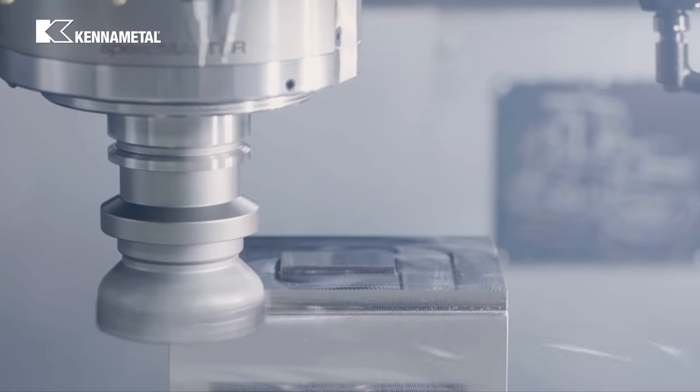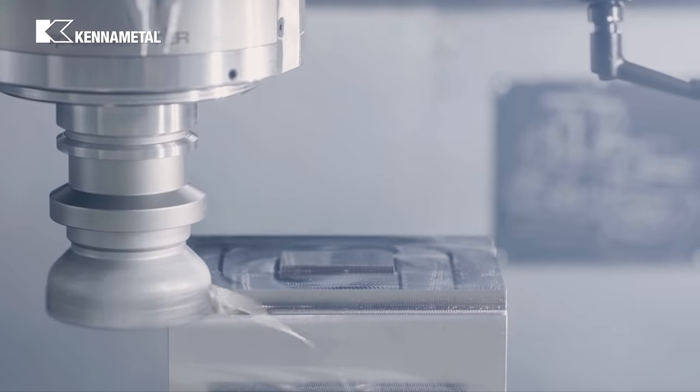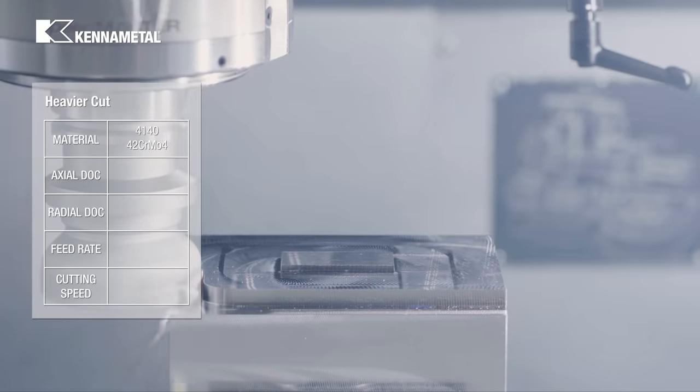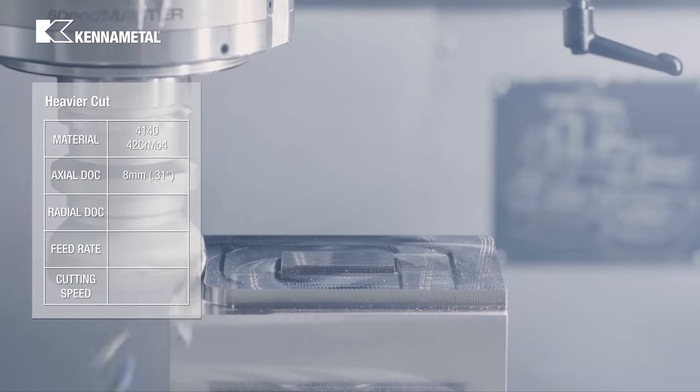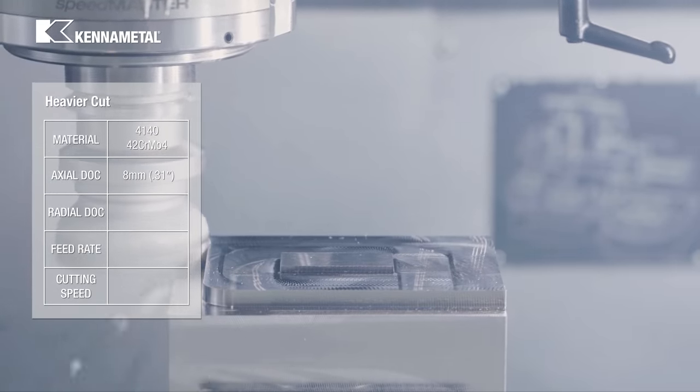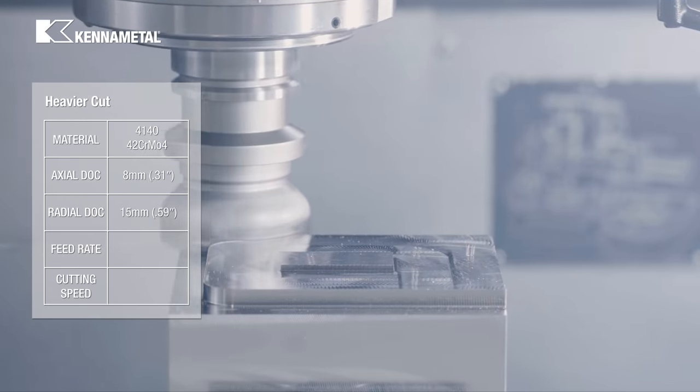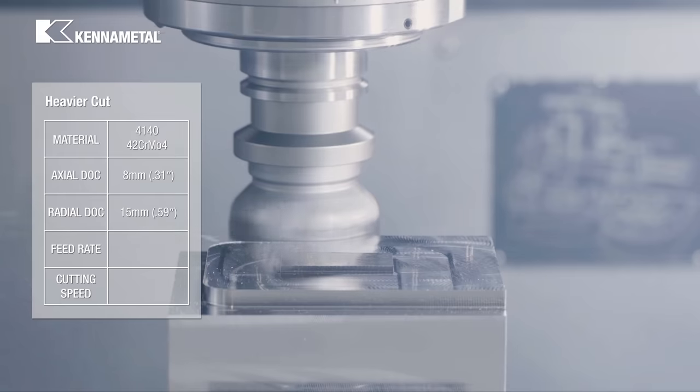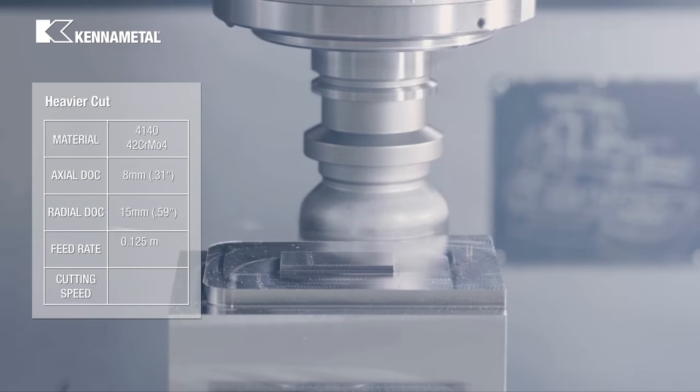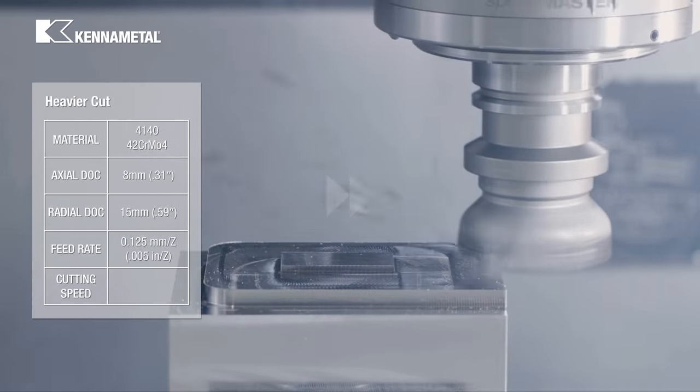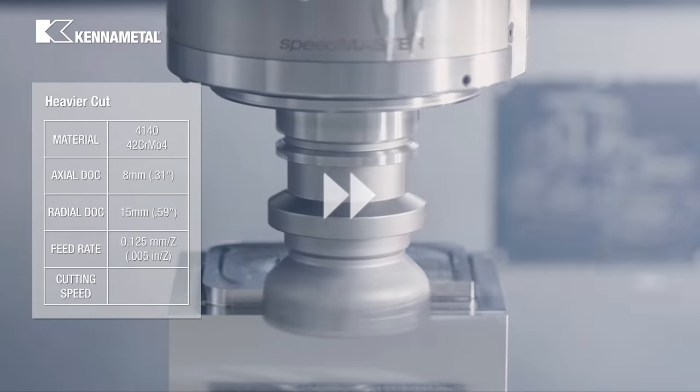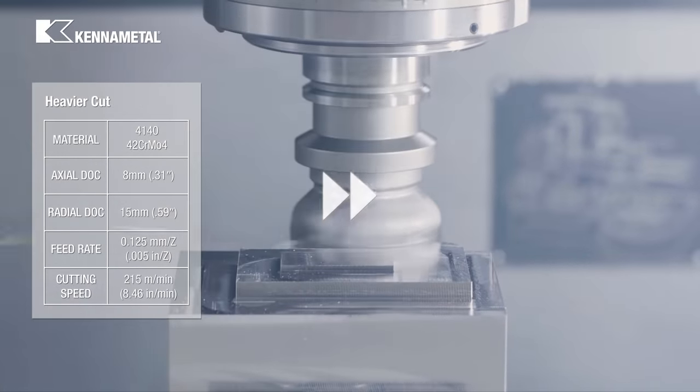This time we're adjusting the cutting parameters to stay within the capabilities of the machine. We're increasing the axial depth of cut to 8 millimeters while we are reducing the radial depth of cut from 20 millimeters to 15 millimeters. We're cutting the feed rate in half from 0.25 millimeters per tooth to 0.125 millimeters per tooth. The cutting speed remains the same with 215 meters per minute.